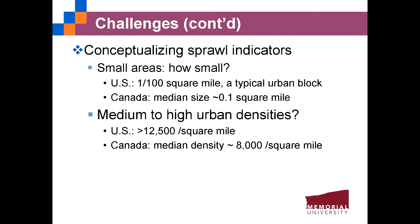A second challenge is conceptualizing the sprawl indicators. Different ratios or criteria might be used to define the same sprawl indicator in different countries. For example, in defining a small area, the U.S. study used 0.01 square mile — the size of a typical urban block — while in Canada the median size of a dissemination area is 0.1 square mile, which is the criterion we used. Additionally, what are medium-to-high urban densities? In the U.S. the criterion is 12,500 persons per square mile, but the median density in Canada is only 8,000.